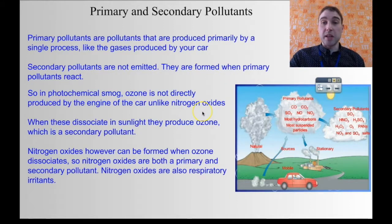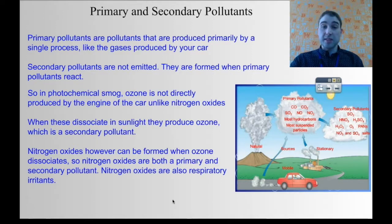So ozone is one of the things that's produced. If we look at our diagram over here, we can see ozone is a secondary pollutant that's produced from nitrogen dioxide and nitric oxide over here. So they react together to make the ozone which is the secondary pollutant.